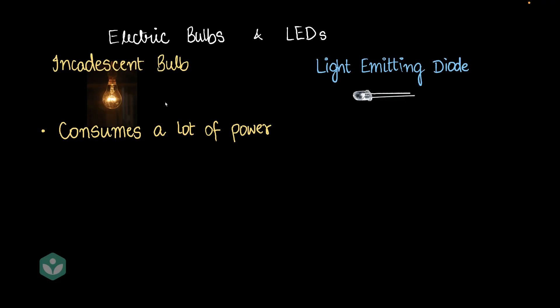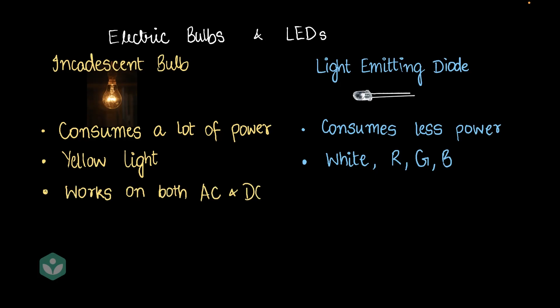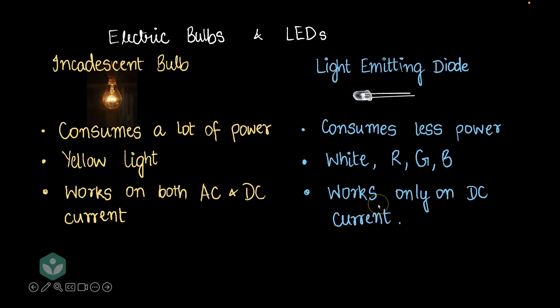LEDs, on the other hand, do not produce much heat, and so they consume less power. Incandescent bulbs produce yellow light, whereas LEDs can produce any color light — white, red, green, blue, or any shade you want. Incandescent bulbs work on both AC and DC current, whereas LEDs work only on DC current, so that's a limitation for the LED.